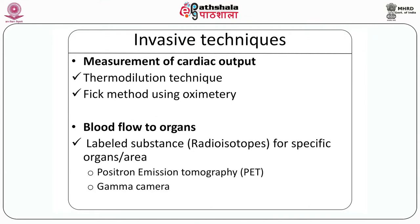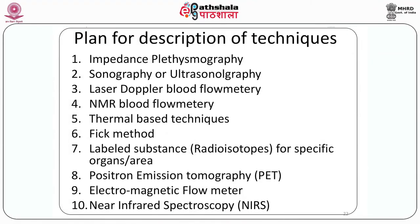The invasive techniques most of the time are more reliable and serve as a gold standard. For measurement of cardiac output, we can use the thermodilution technique or Fick method using oximetry. The invasive techniques used to measure blood flow to individual organs include injection of labelled substances or radioisotopes, and the organ is imaged using PET, MRI, or a gamma camera. There are specific substances used for specific organs.